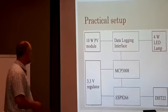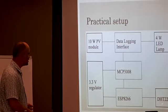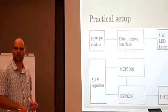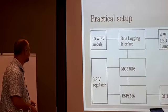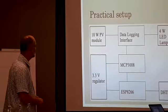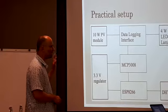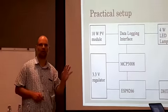In terms of the block diagram: we're using the DHT22—I think some of you are familiar with that. It's a temperature sensor used extensively with the Arduino microprocessor. We're using a 4 watt LED lamp. The module is 10 watts, but we're not drawing the full potential from the module.